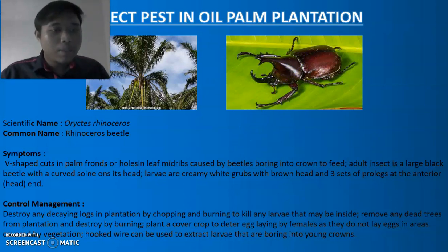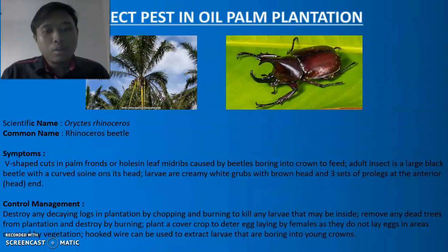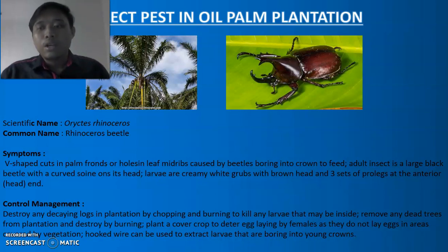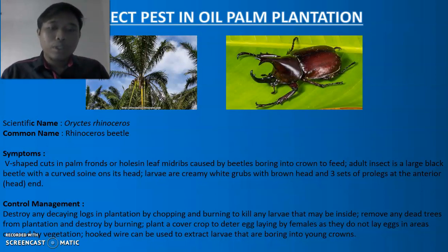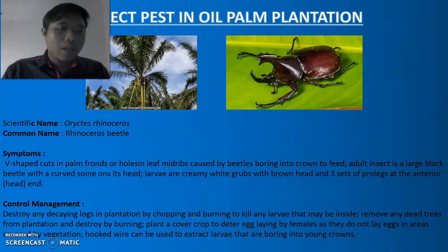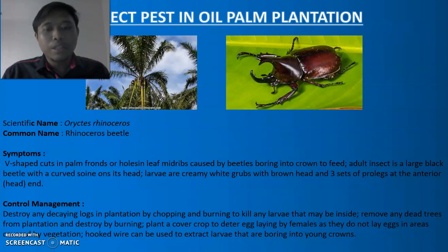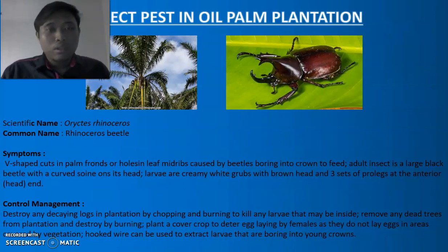The control management for Rhinoceros beetle: destroy any decaying logs in the plantation by chopping and burning to kill any larvae that may be inside. Remove any dead trees from the plantation and destroy by burning. Plant a cover crop to deter egg-laying by females, as they do not lay eggs in areas covered by vegetation. Hooked wire can be used to extract larvae that are boring into young crowns.